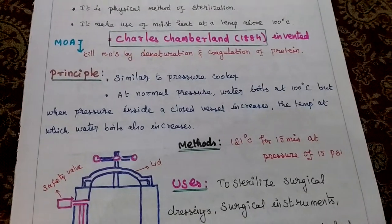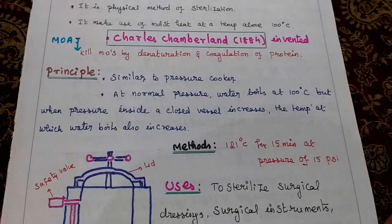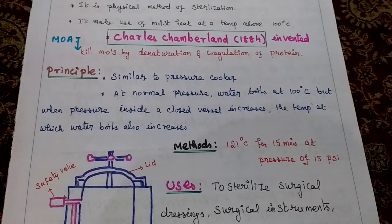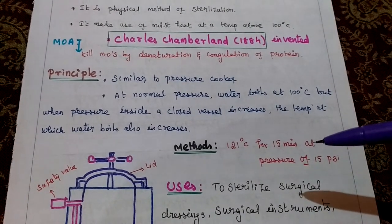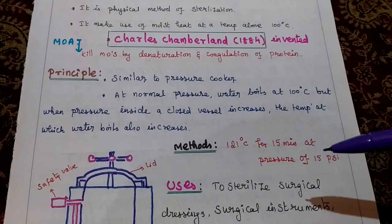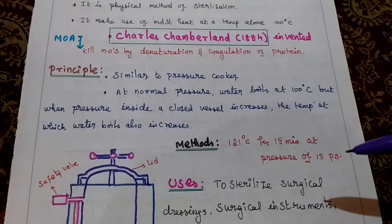Method. Autoclaving is carried out at 121 degrees Celsius for 15 minutes at a pressure of 15 psi.